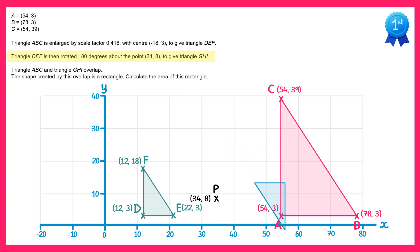We need to find the coordinates of each of those points. Let's start with point D, which has coordinates (12,3), and the centre is (34,8). The horizontal distance between these two points is 34 minus 12, which is 22. So the x coordinate of where D moves to will be 22 to the right of 34: 34 plus 22 gives 56. For the y coordinates: D is at 3 and the centre is at 8, so the centre is 5 higher. Adding 5 more onto 8 gives 13. So the coordinates (12,3) map to a new point G at (56,13).